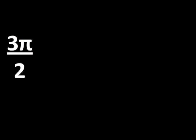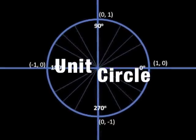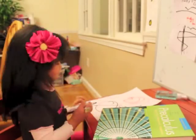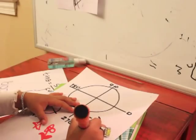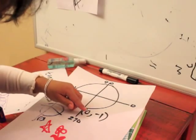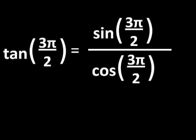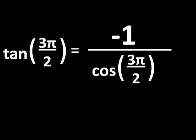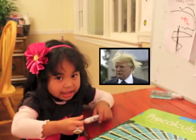Okay, 3 pi over 2 is 270 degrees. Can I use the unit circle for the coordinates, please? Sure. Okay, the cosine is 0 and the sine is negative 1. I can't believe I'm doing math and having fun. So the tangent at this point is negative 1 over 0.